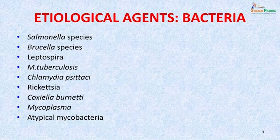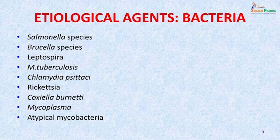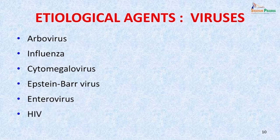The common etiological agents can be bacterial, viral, parasitic, fungal, and non-infectious. The common bacterial causes are Salmonella, Brucella, Leptospirosis, Mycobacterium — whether classical Mycobacterium tuberculosis or atypical Mycobacteria — Chlamydia psittaci, Rickettsia, Coxiella burnetii, and Mycoplasma. The viral agents are cytomegalovirus, Epstein-Barr virus, arboviruses, Enterovirus, and HIV.